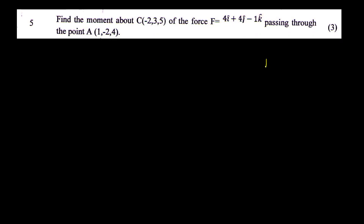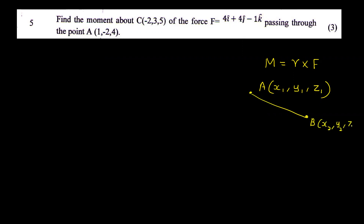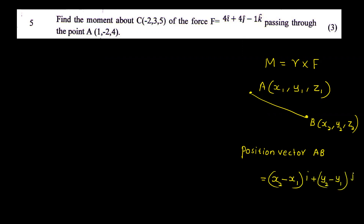We have to start with the moment M equal to R cross F. We have two points. The position vector AB equals (x2 minus x1) i plus (y2 minus y1) j plus (z2 minus z1) k.